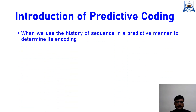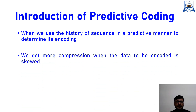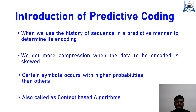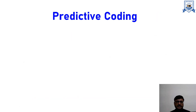What is predictive coding? In this, we use the history of the sequence in a predictive manner to determine what we are going to encode. We have to see previously what is the context of a particular symbol and then only we encode. That is why these are also known as context-based coding. We are going to get more compression ratio if the data is skewed, like if one particular symbol has a higher probability of occurrence than other symbols. These are also known as context-based algorithms.